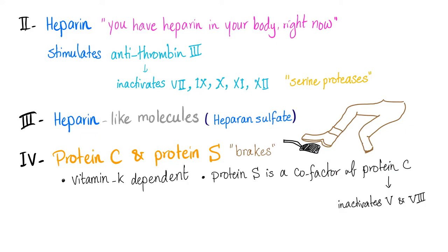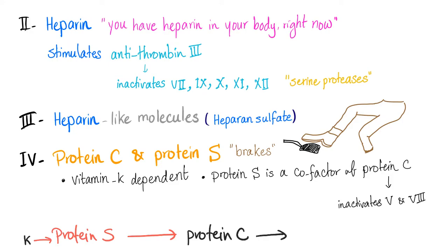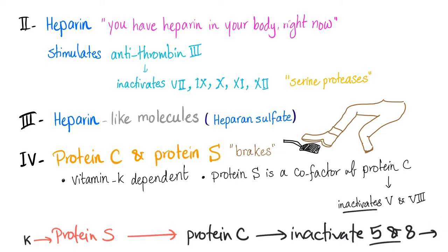Protein S is a cofactor of protein C. It goes like this: we start with the great vitamin K, then protein S, then protein C. Protein C is going to inactivate the accelerators of coagulation, which are factors 5 and 8. When factors 5 and 8 are stopped and deactivated, you will not have the common pathway and the fibrin meshwork — it's not going to happen.